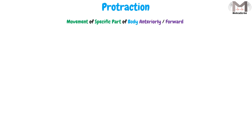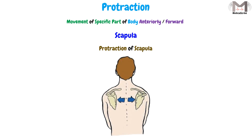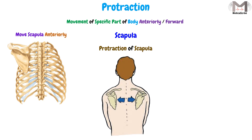Firstly we have the protraction. The protraction will be used to describe the movement of a specific part of the body anteriorly or forward, and it is almost always used with the scapula. So in the protraction of the scapula, we will move the scapula anteriorly or forward, and at the same time away from the midline of the body, which means we will move it laterally. So this movement of the scapula is known as anterolateral movement.